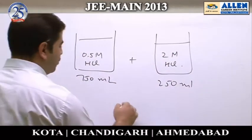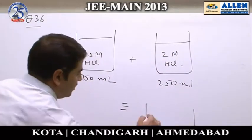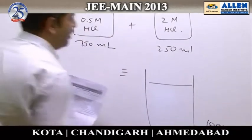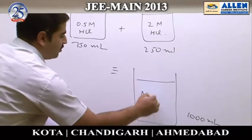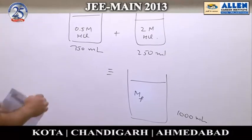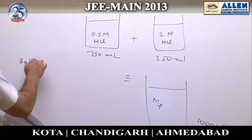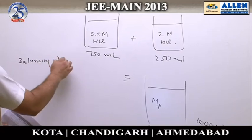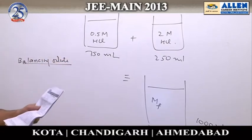When these solutions are combined, the final solution is going to have a volume of 1000 ml, and let us say that final molarity is equal to M final. Now balancing the moles of the solute, we compare the initial moles and the final moles.